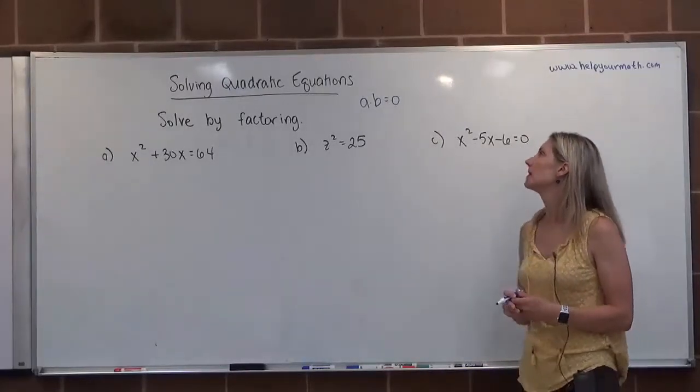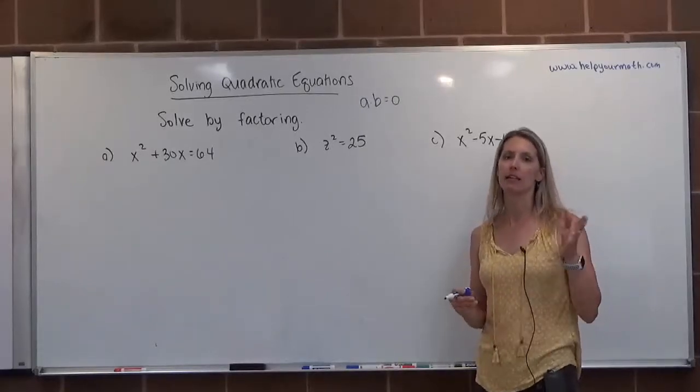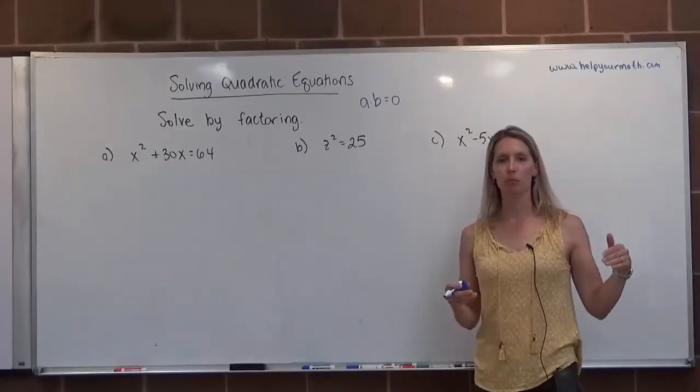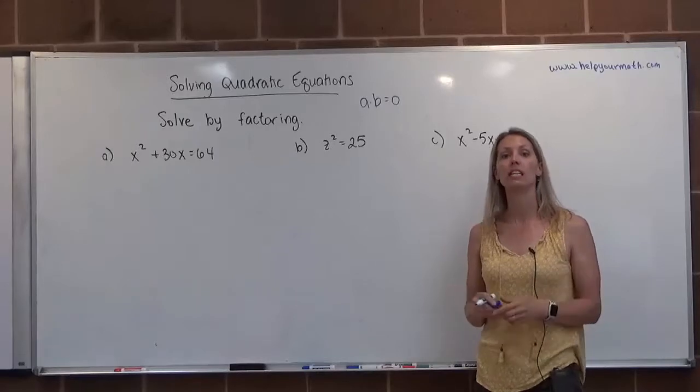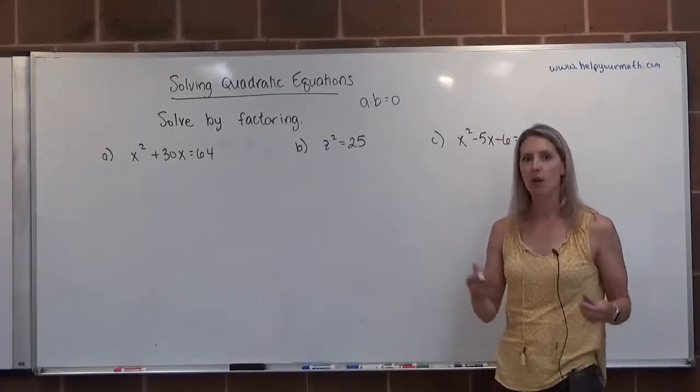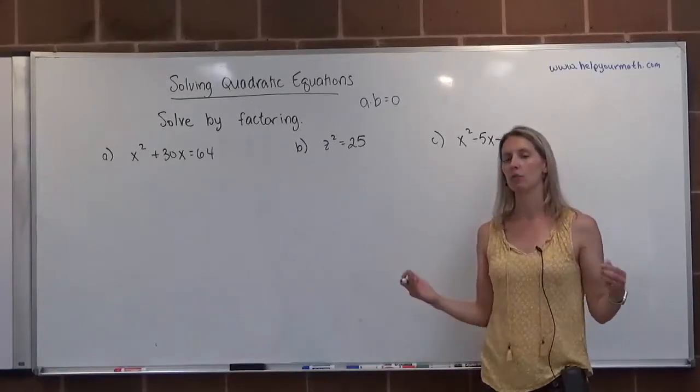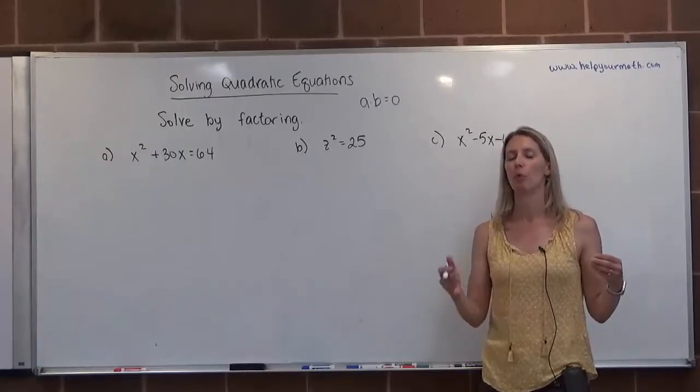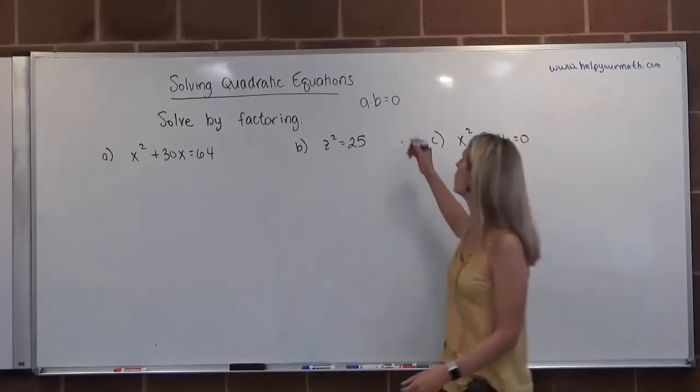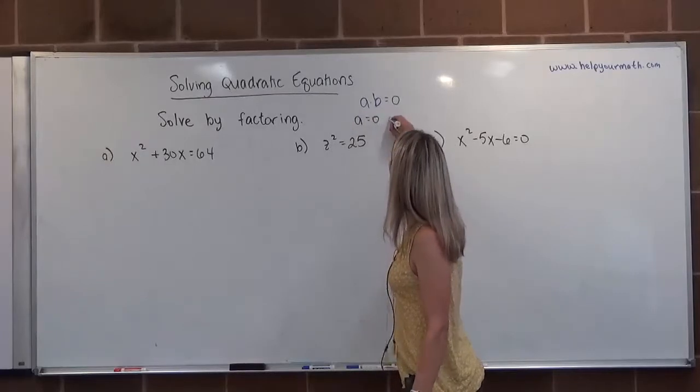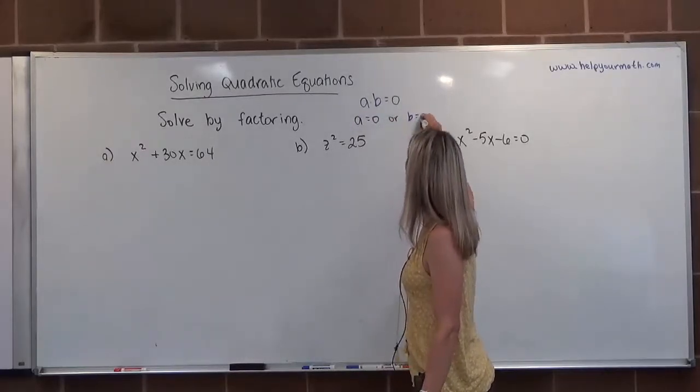And then what we know is there's this thing called the zero product property, and that says that if two things are being multiplied and the product is zero, one of those things must equal zero. There's no other way, you can't multiply any two numbers to get zero unless one of the factors is zero itself. So what that means is that either a is equal to zero or b is equal to zero.